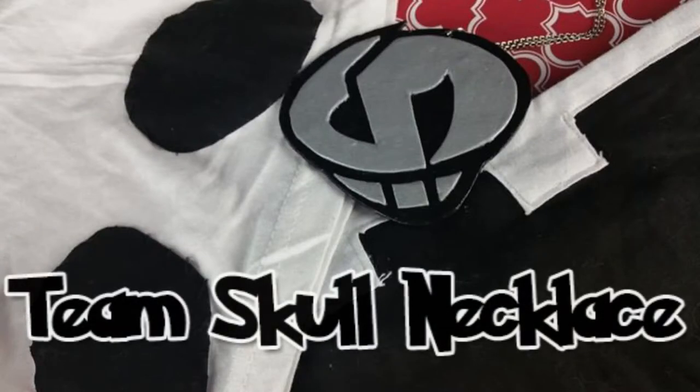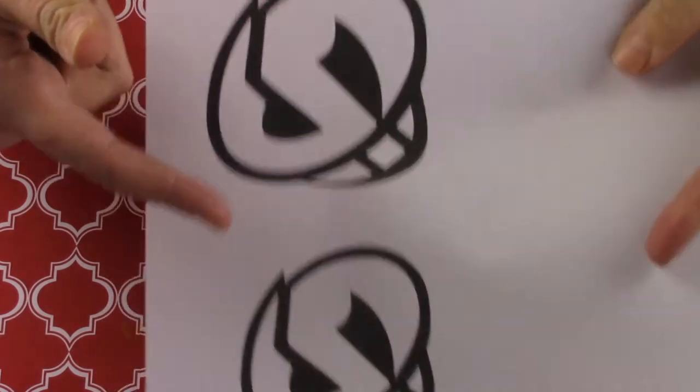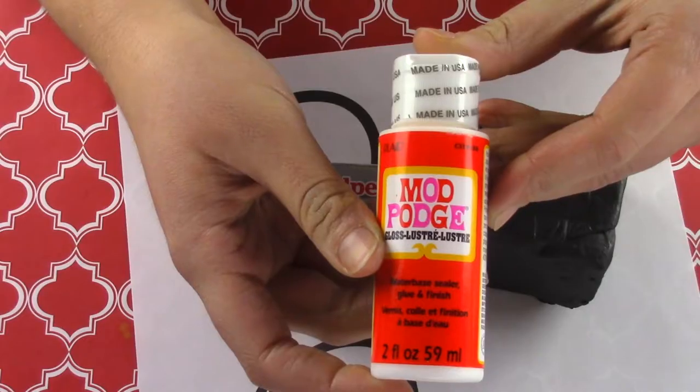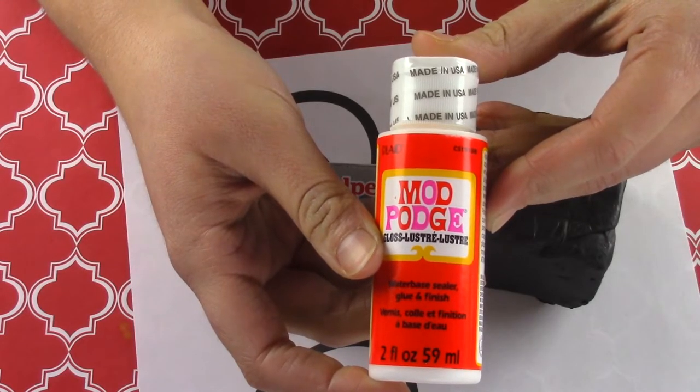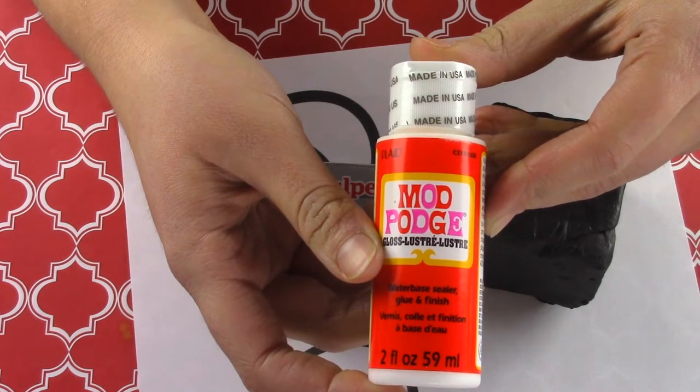The materials you'll need to make this Team Skull necklace are a cutout of the Team Skull logo. I put mine on Photoshop and tried a few different sizes and then printed that out, and I chose this one. Silver and black clay, something to seal in the design. I'm using glossy Mod Podge, but you may use sculpey glaze or triple thick.